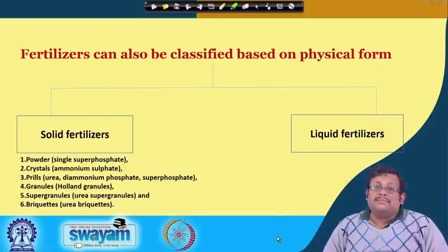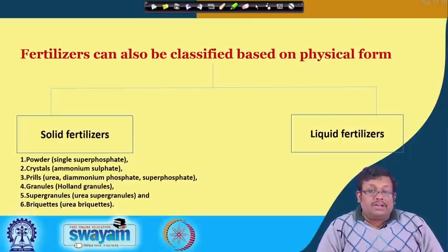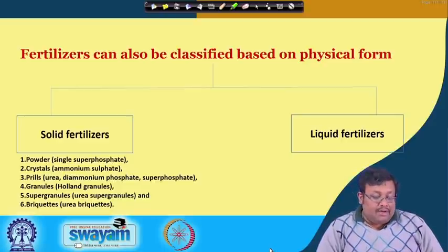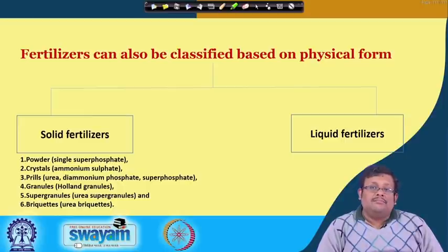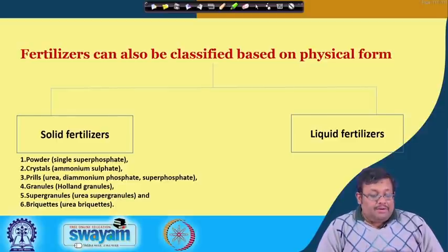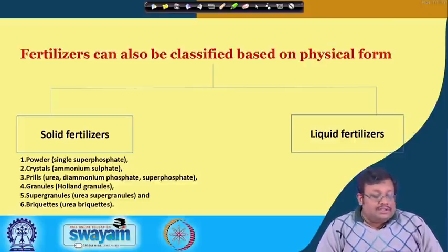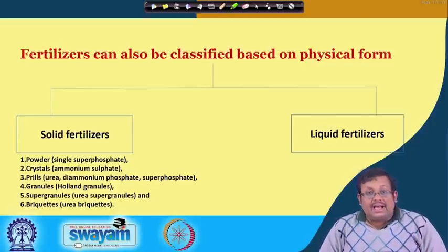Fertilizers can also be classified based on physical form — into solid fertilizers and liquid fertilizers. Solid fertilizers can be found in powder form, for example single super phosphate (SSP), which is the most common phosphatic fertilizer in India. Also crystals, for example ammonium sulphate; prills, for example urea, diammonium phosphate, and super phosphate; and granules including super granules and briquets such as urea briquets.